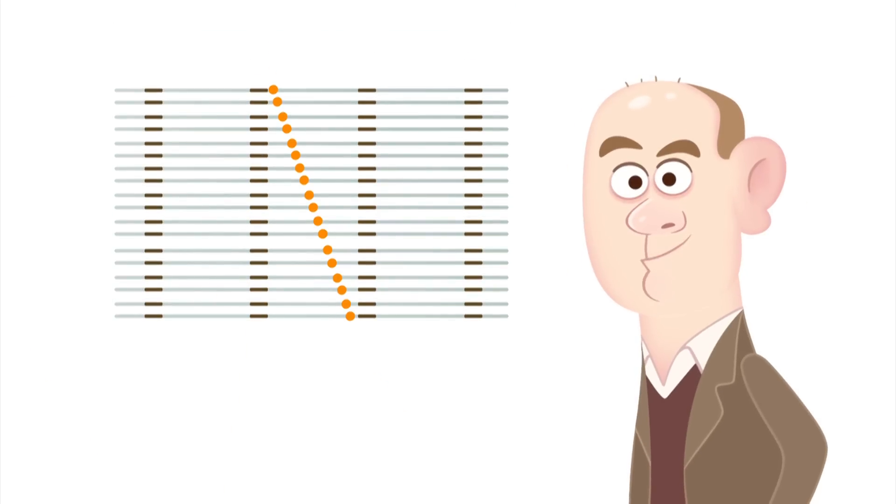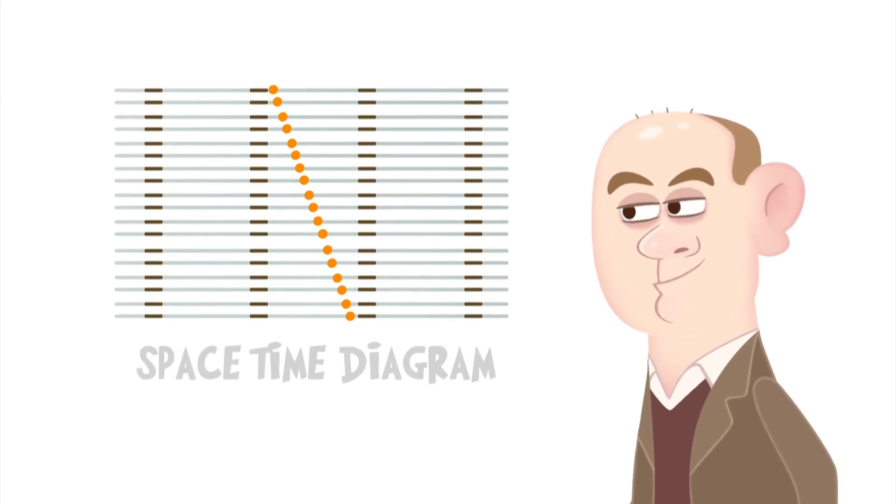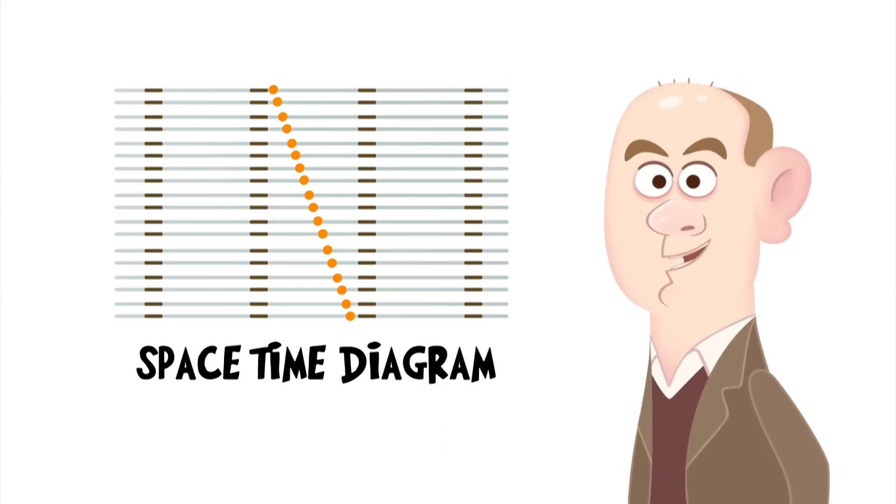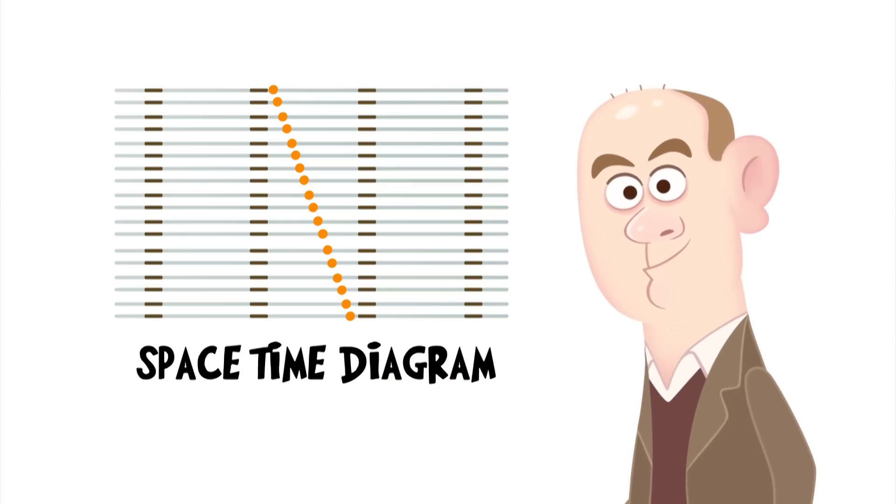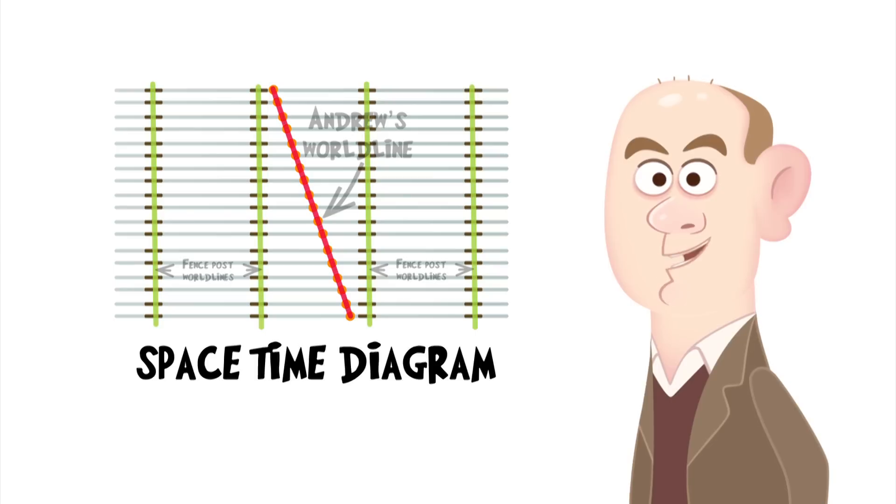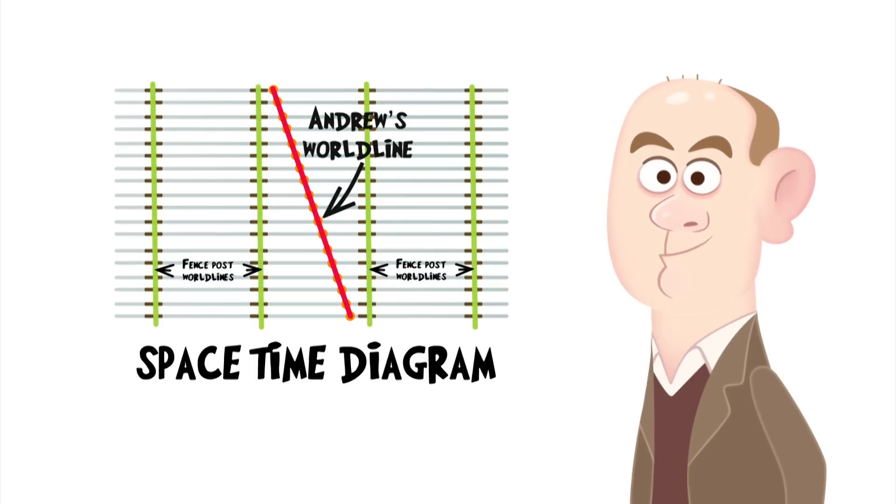The edge of this flipbook is known as a space-time diagram of Andrew's journey through, you guessed it, space and time. We call the line that represents Andrew's journey his world line.